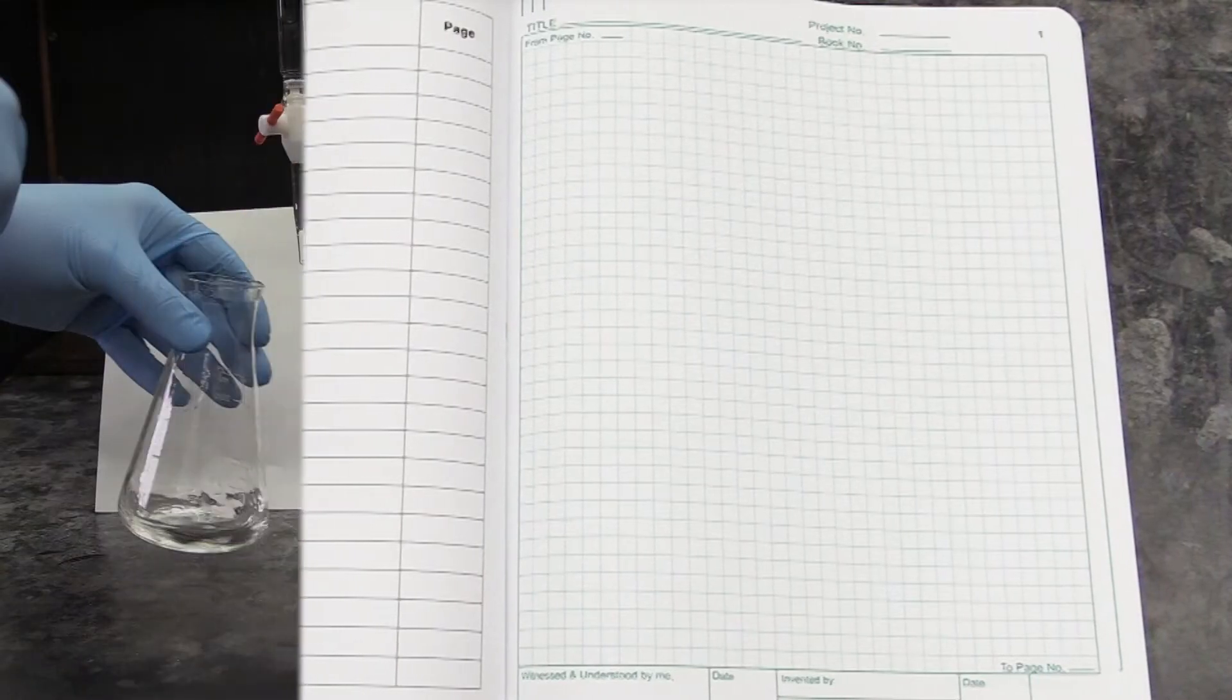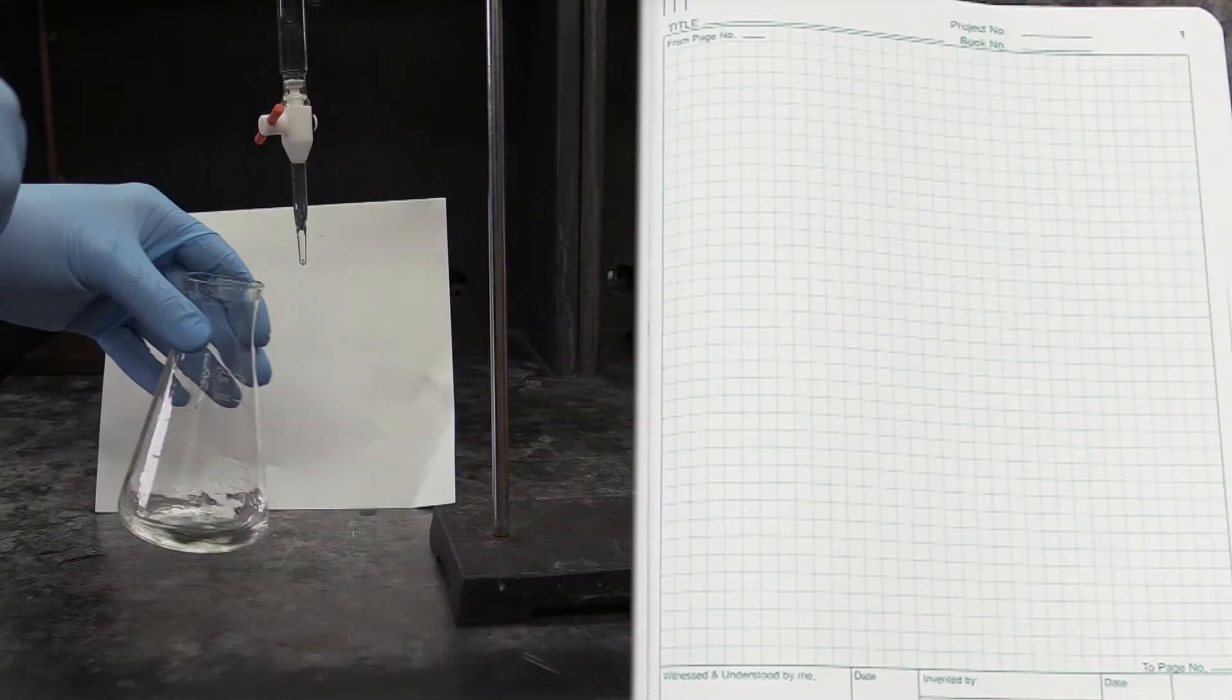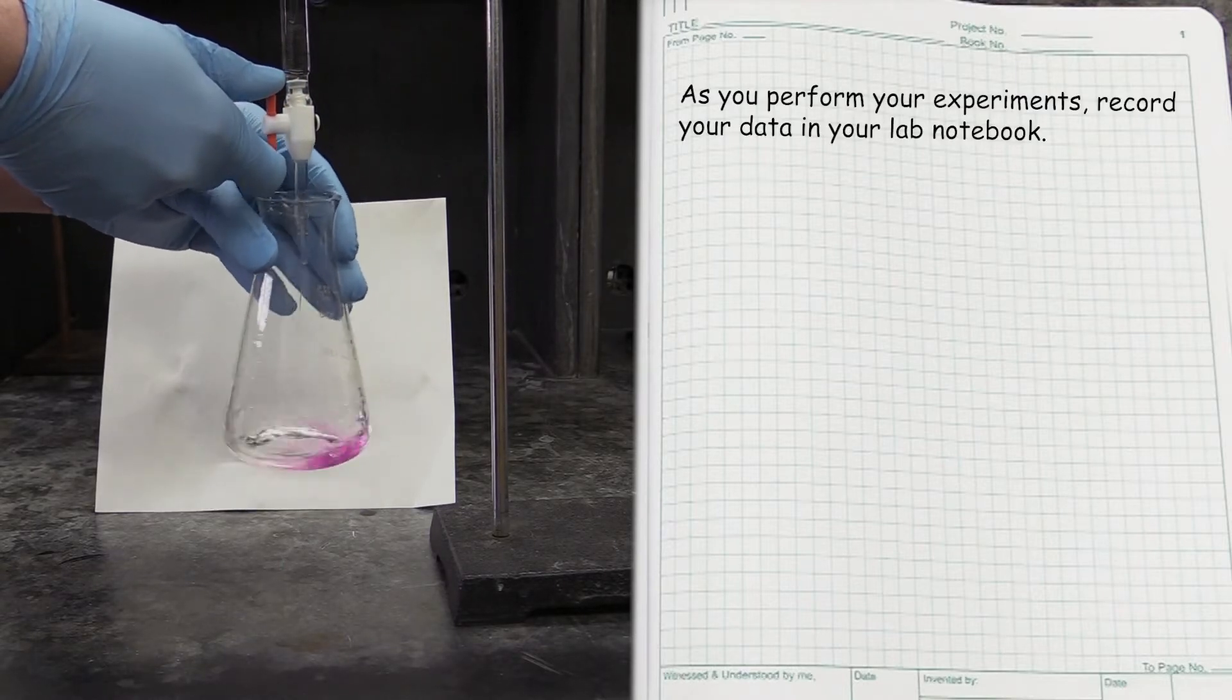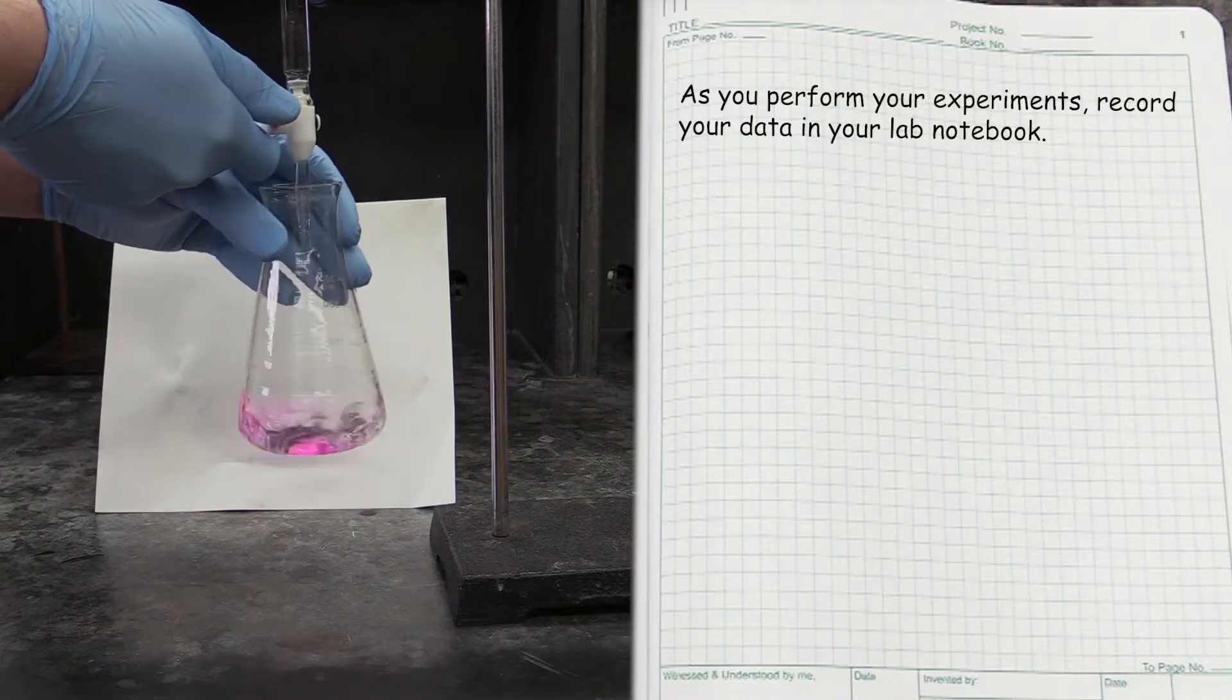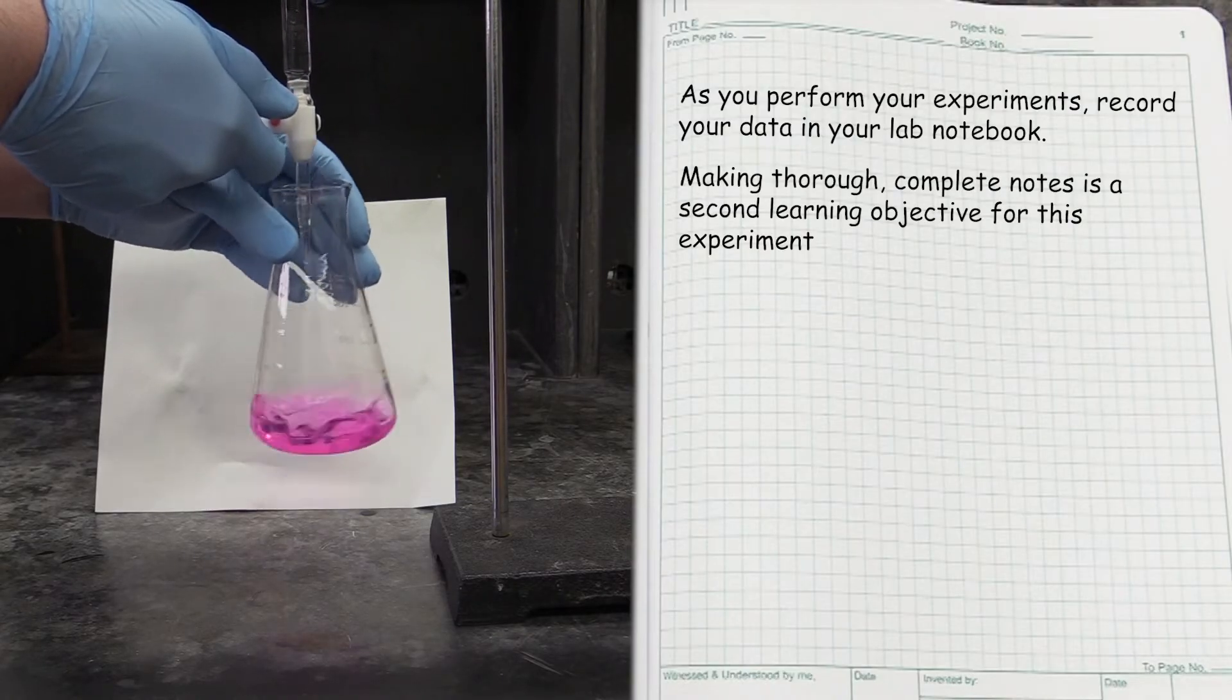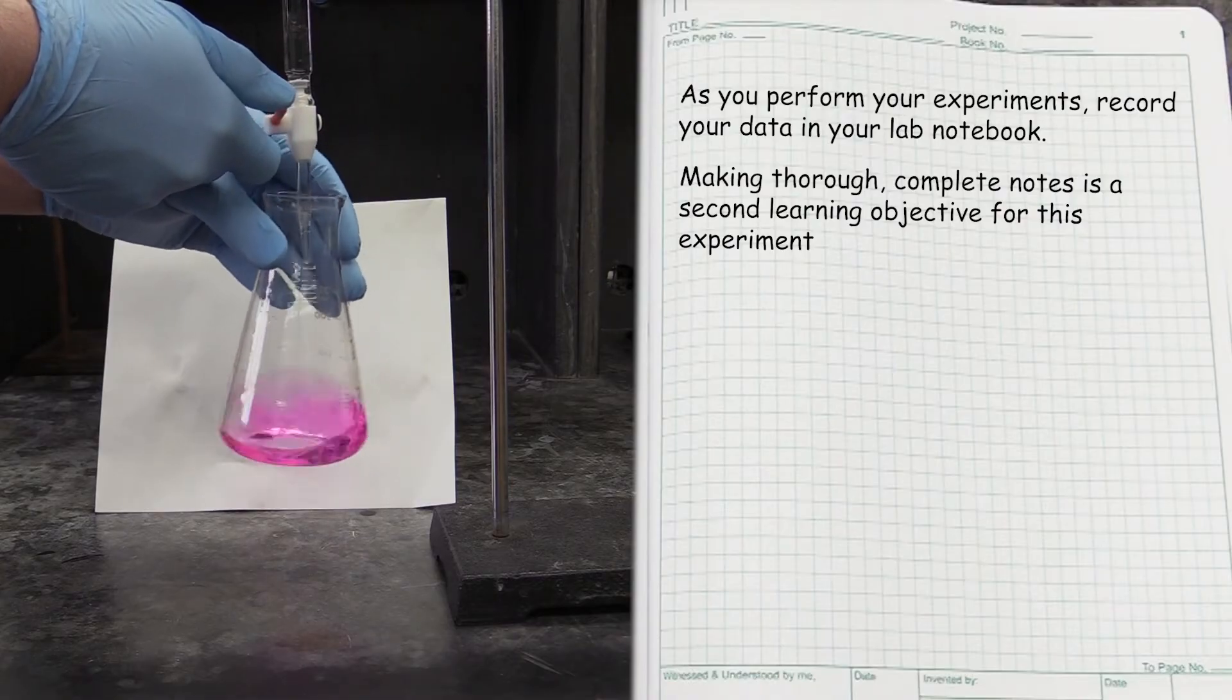Once your coat and goggles are on, it will be time to start your experiments. As you perform them, you will need to record your observations in your lab notebook. And this brings us to another of the learning objectives of this experiment, making thorough observations and taking complete notes.